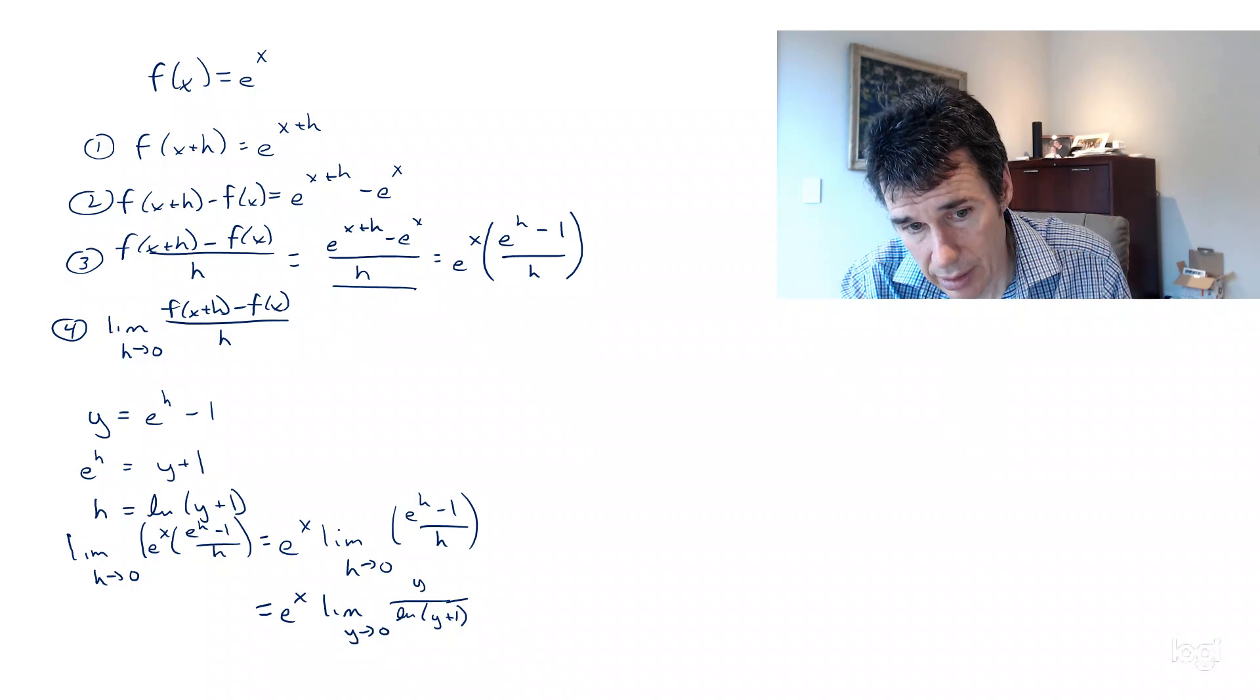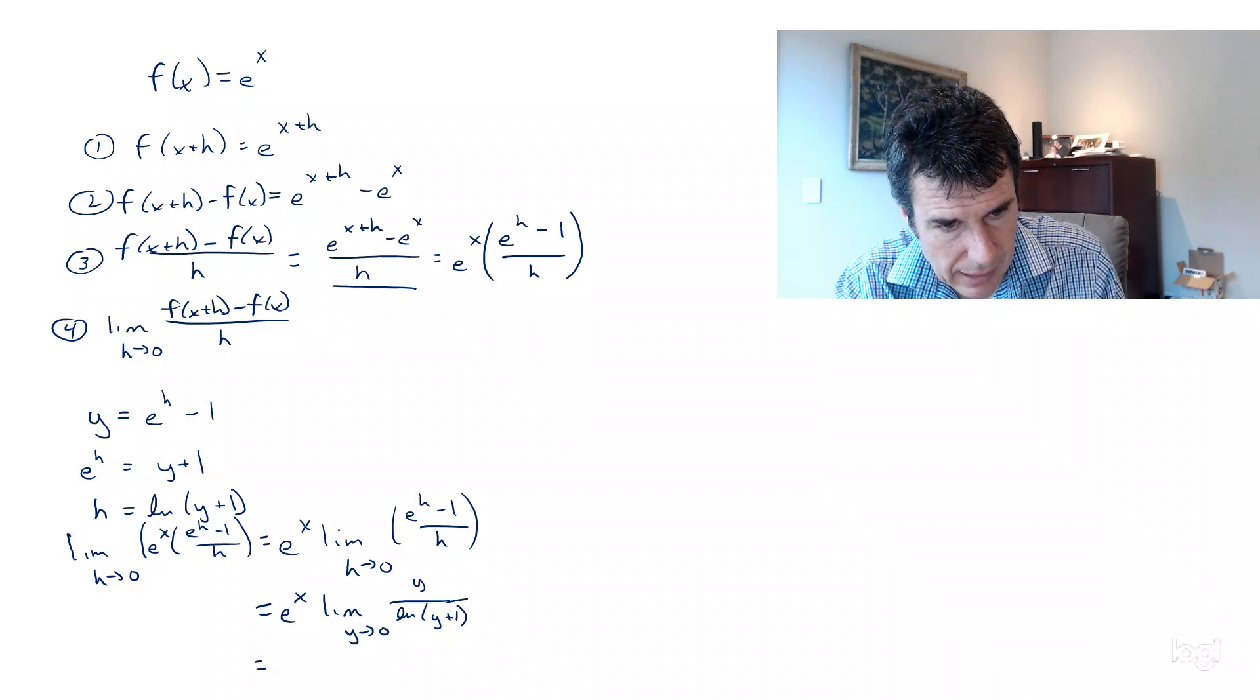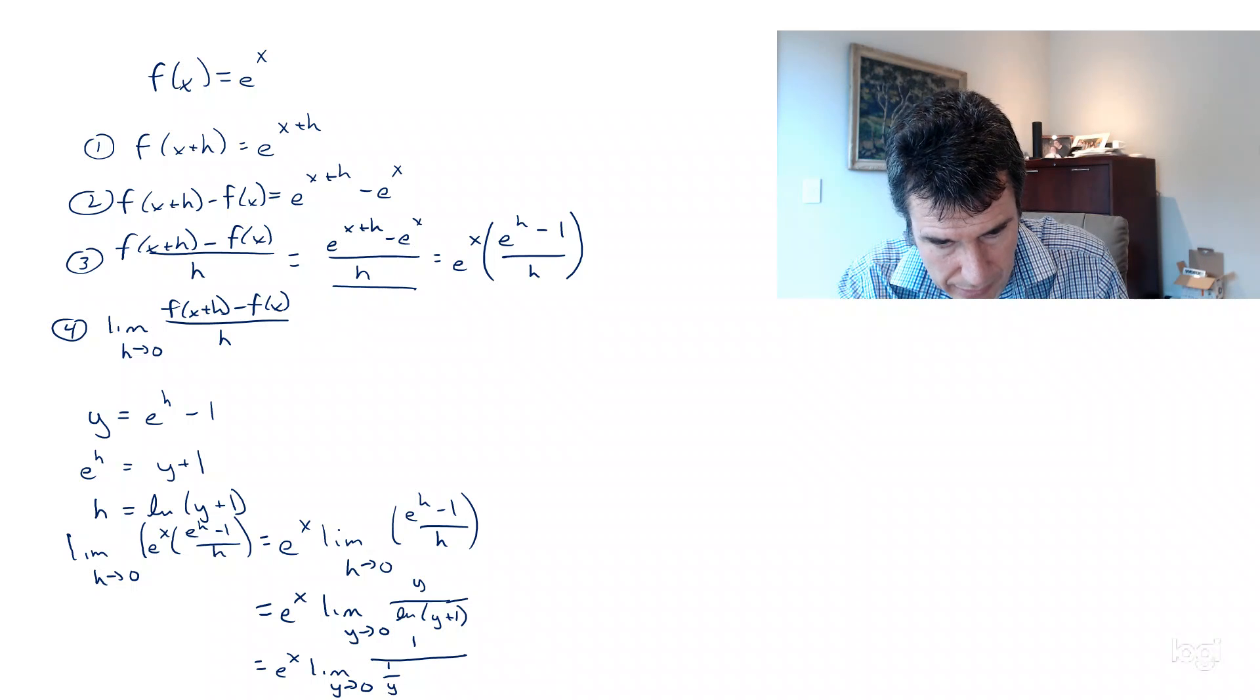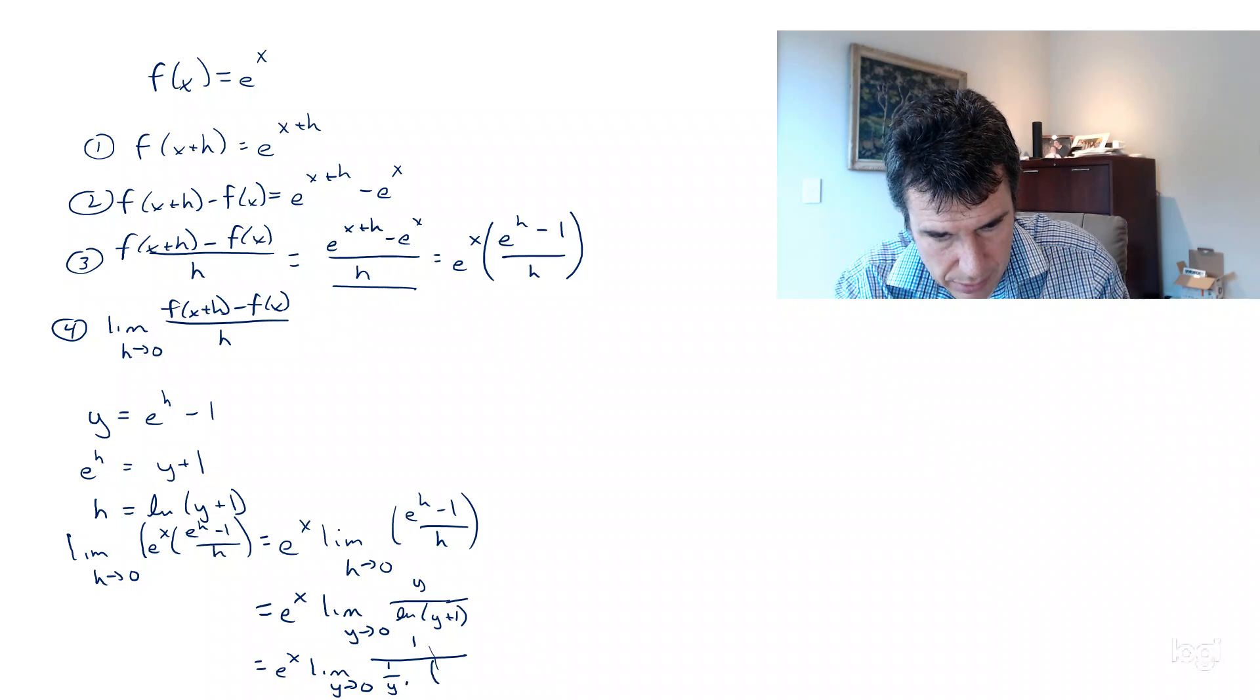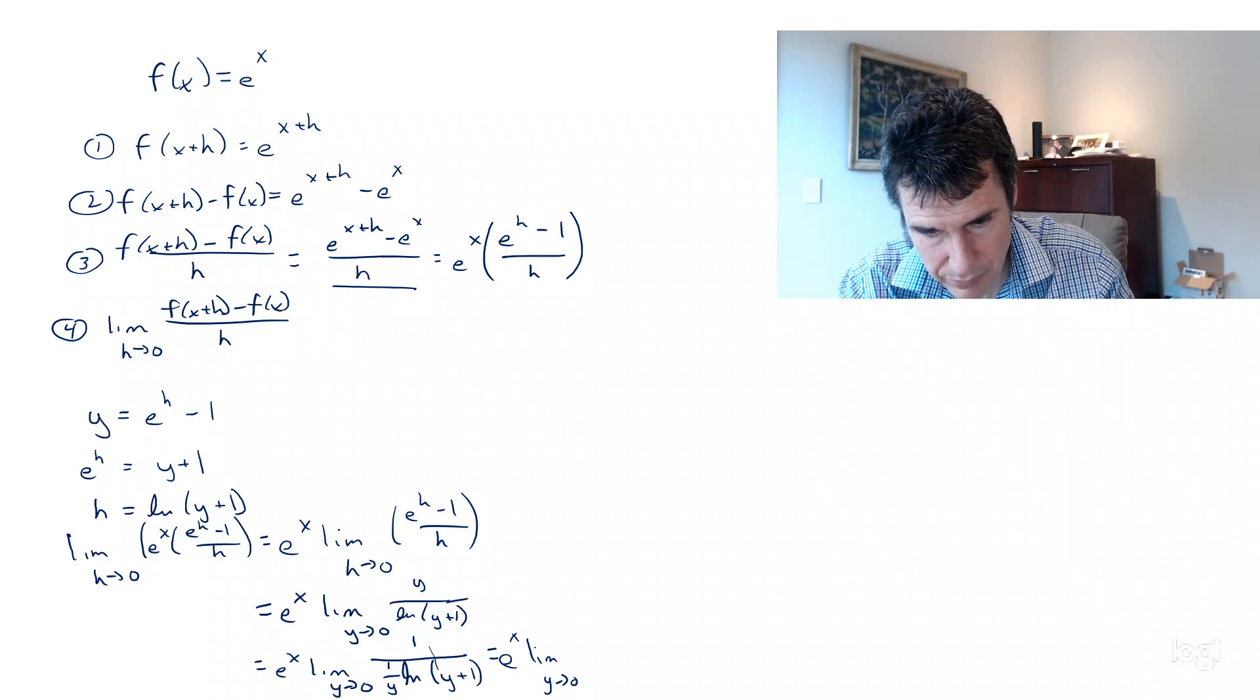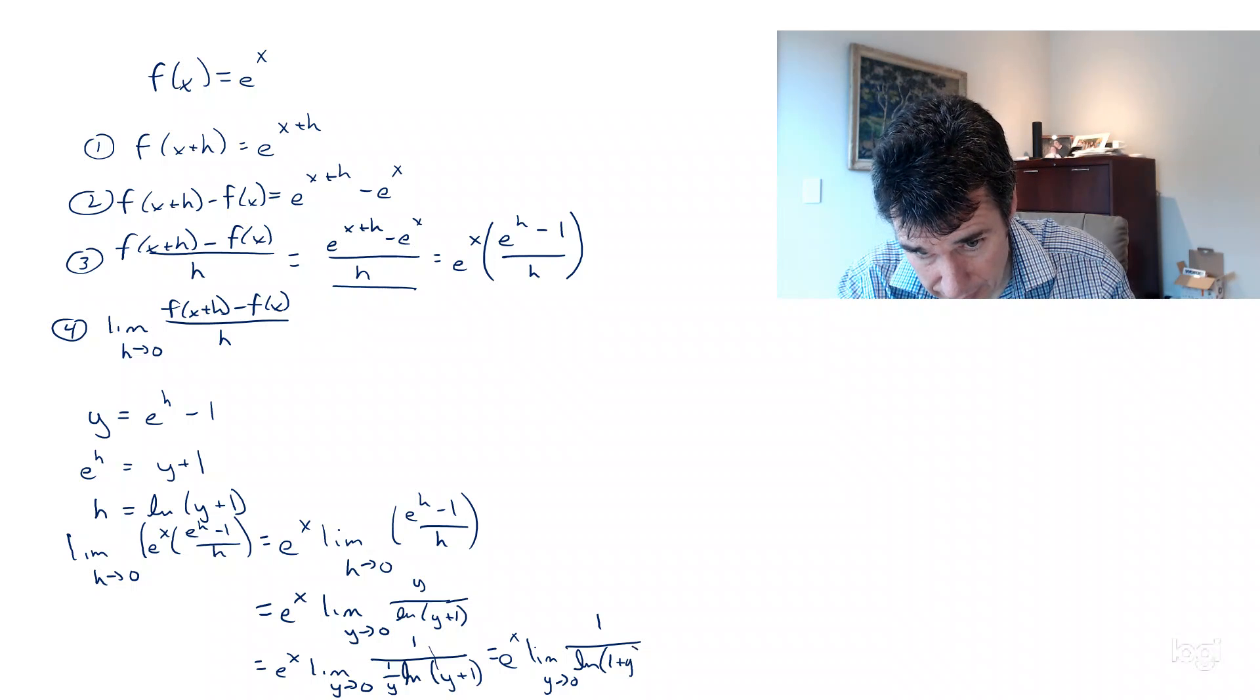And now we've got a little trick. If we have a constant times the natural log of something, that's the same as the natural log of the something to the power of the constant. So let's rewrite this as e^x · lim(y→0) of 1/[(1/y)·ln(y+1)], which is the same as e^x · lim(y→0) of 1/ln[(1+y)^(1/y)].